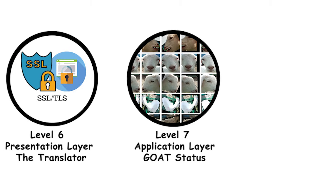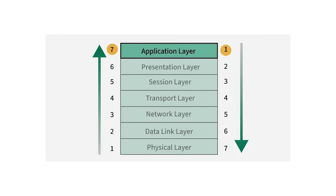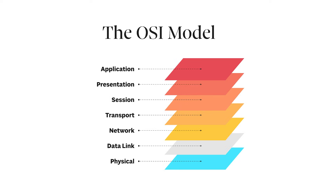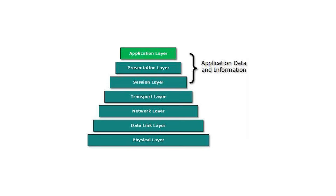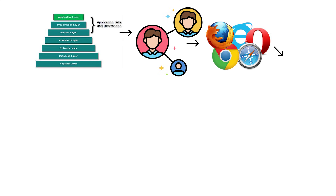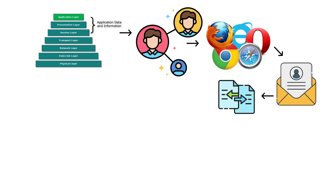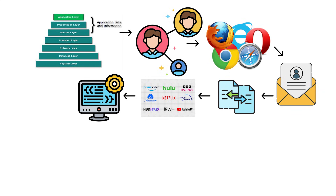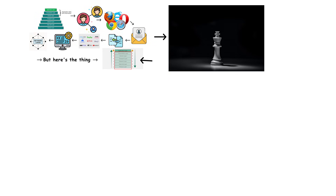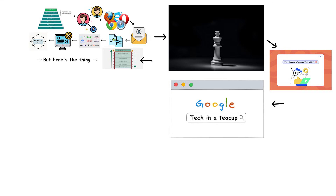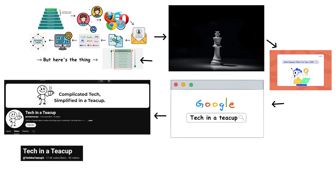Level 7: Application Layer — GOAT status. The absolute pinnacle of OSI model understanding. Layer 7 is the top of the OSI model and where everything comes together. The Application Layer is what you actually interact with: web browsers, email clients, file transfer programs, streaming services — every piece of software you use to access the network operates here. But understanding the Application Layer means understanding all six layers beneath it. Level 7 people see the entire stack simultaneously. When you type a URL into your browser and hit Enter, they understand the complete journey.